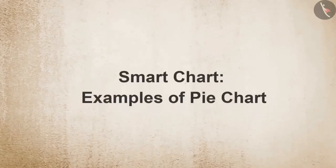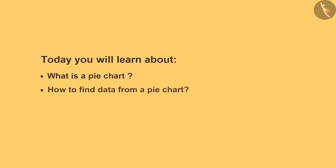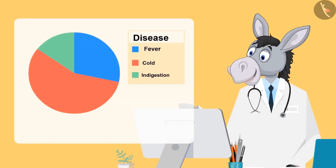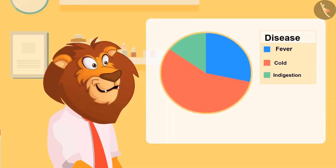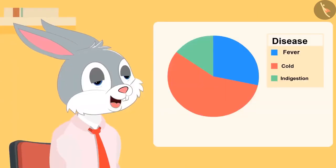Chart. Examples of pie chart. Today you will learn about what is a pie chart and how to find data from a pie chart. So kids, this round-shaped chart you are looking at is known as a pie chart. Is it because it is round like a pie? Yes. Can you tell what this chart is representing?